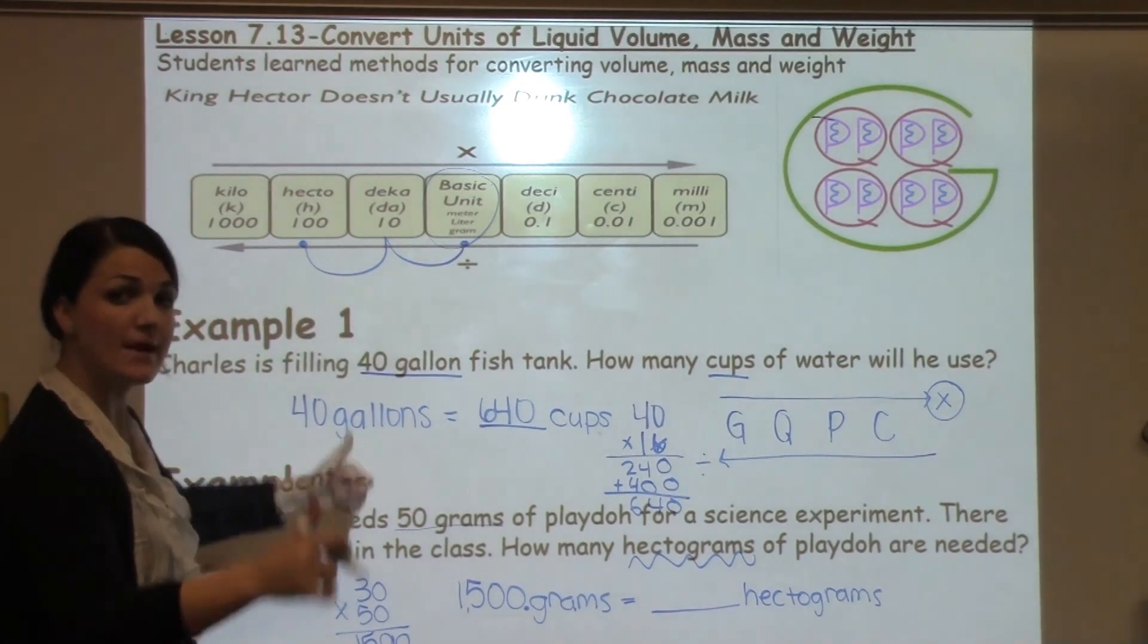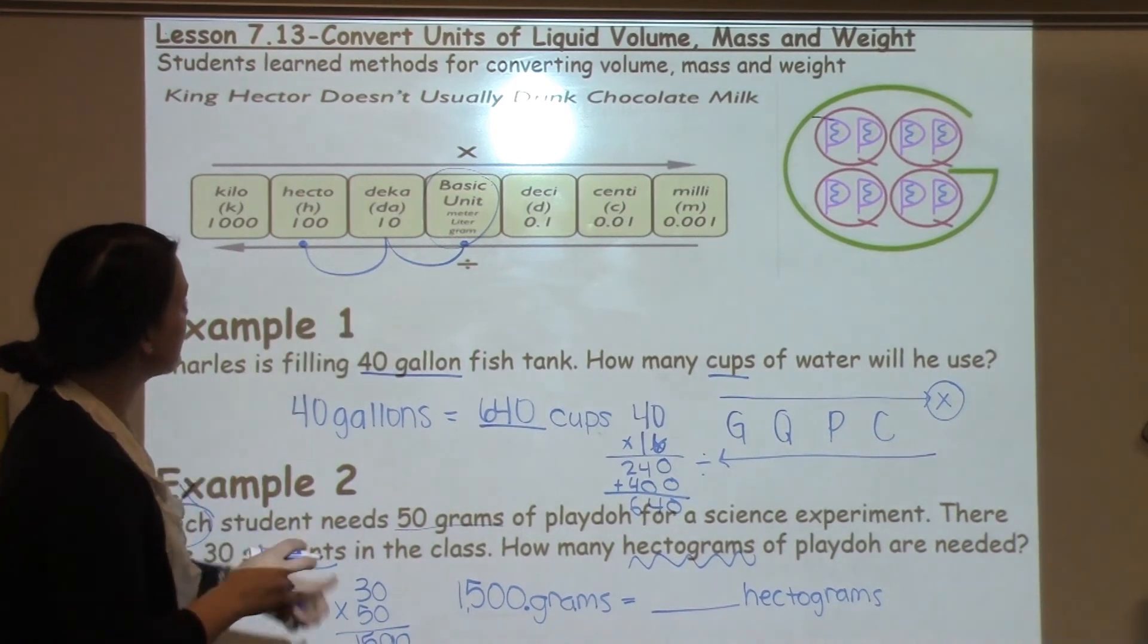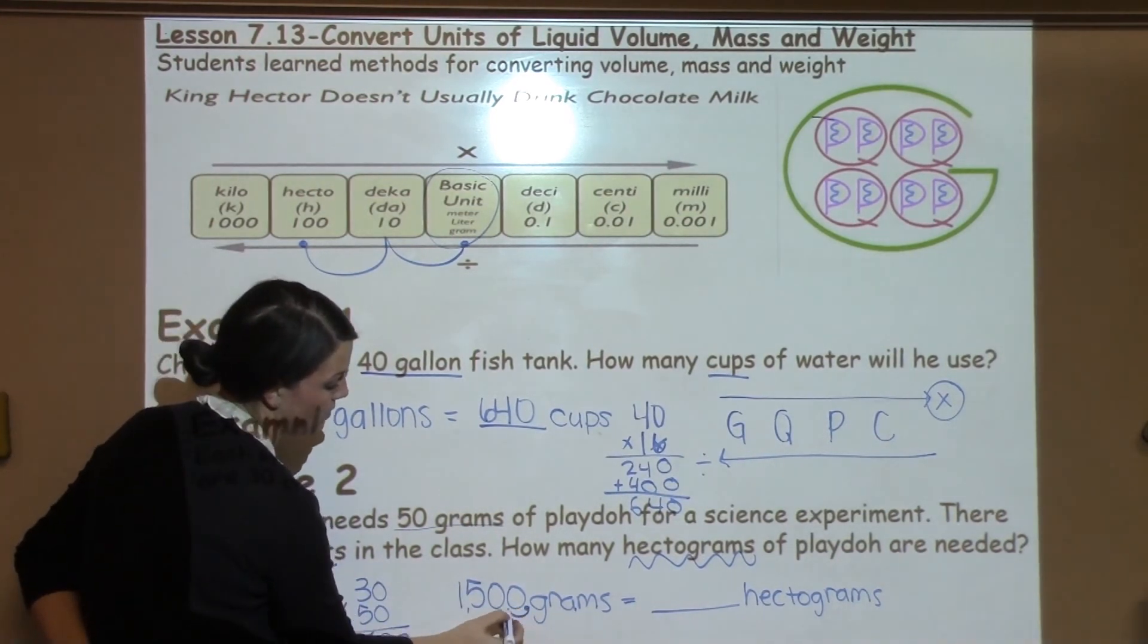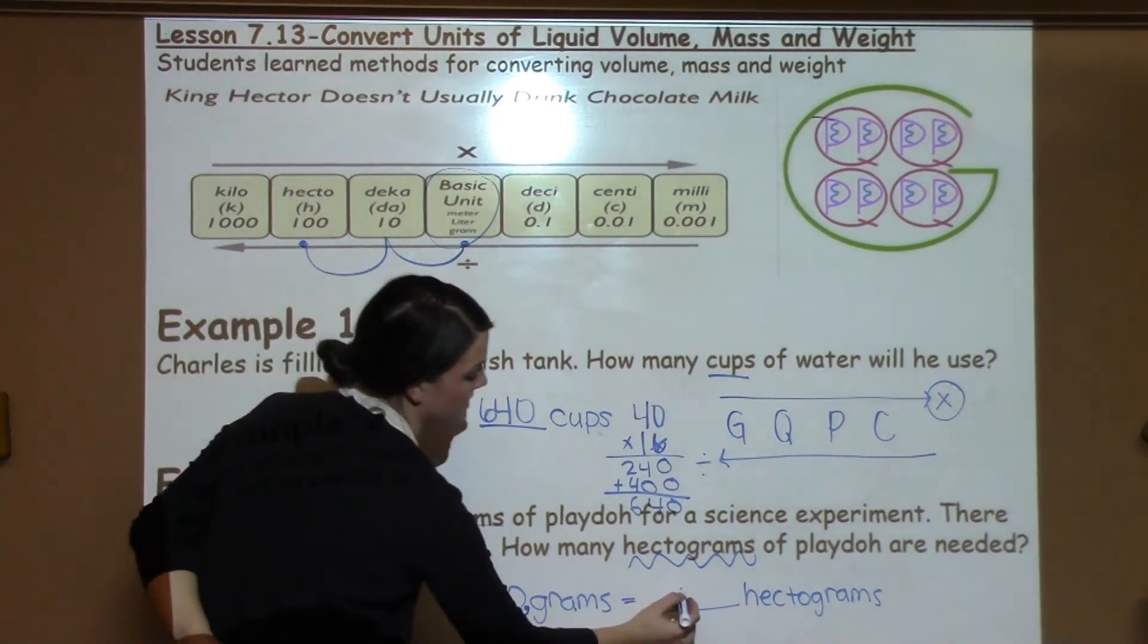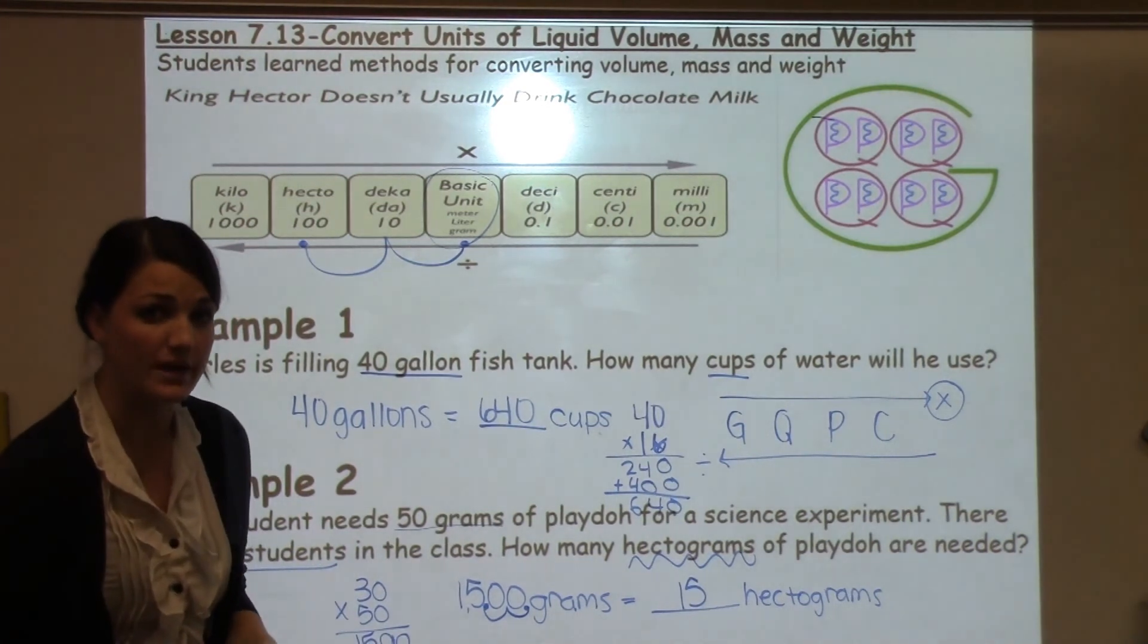So we always have a decimal at the end of a whole number, and it's very simple just to move that decimal the same amount of spaces, the same direction that you moved when you counted up the spots. So all I have to do is move my decimal one, two spots to the right to make the answer 15 for the amount of hectograms.